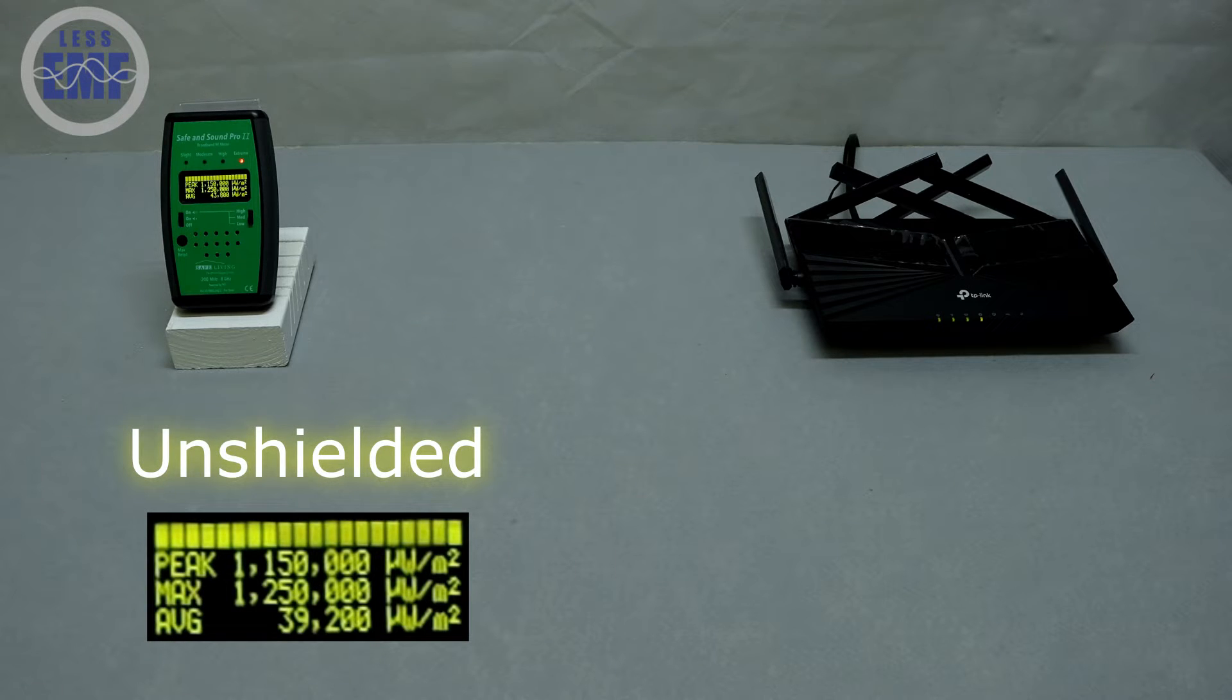As you can see, high RF levels are typical for an active router emitting constant wireless signals.